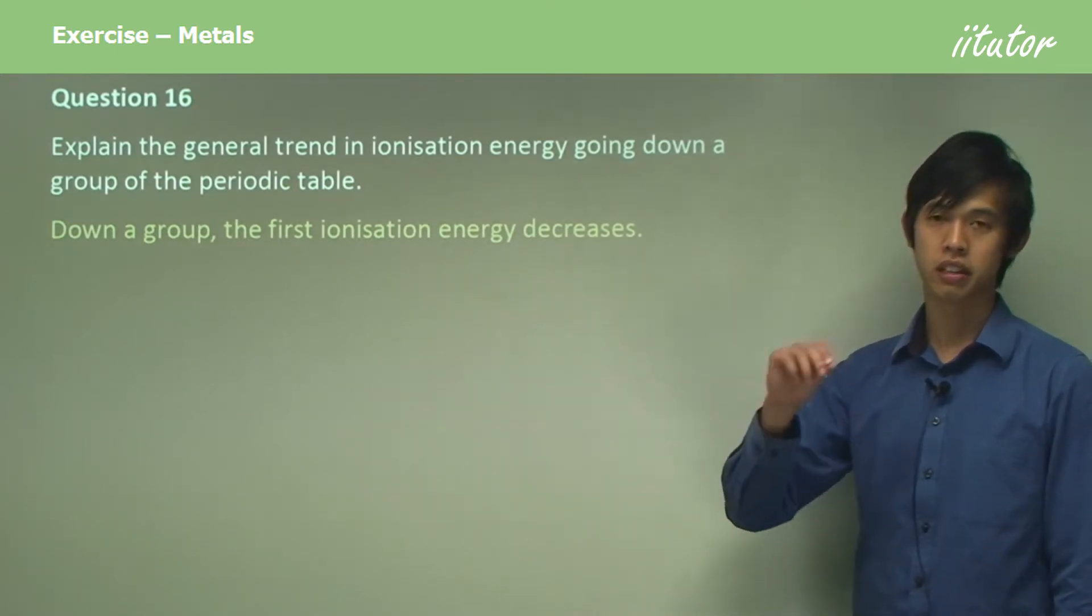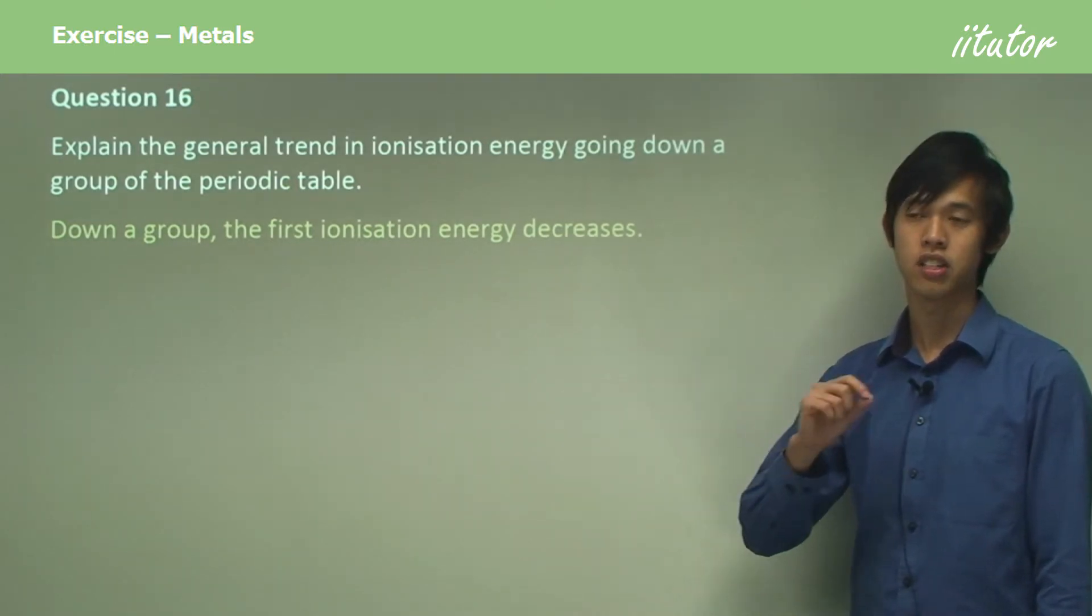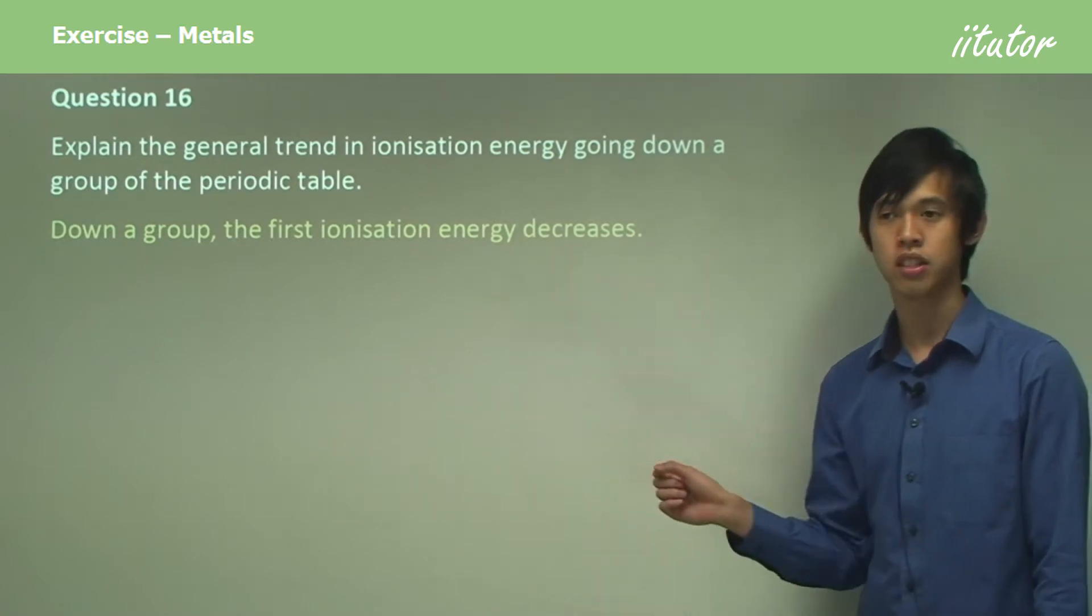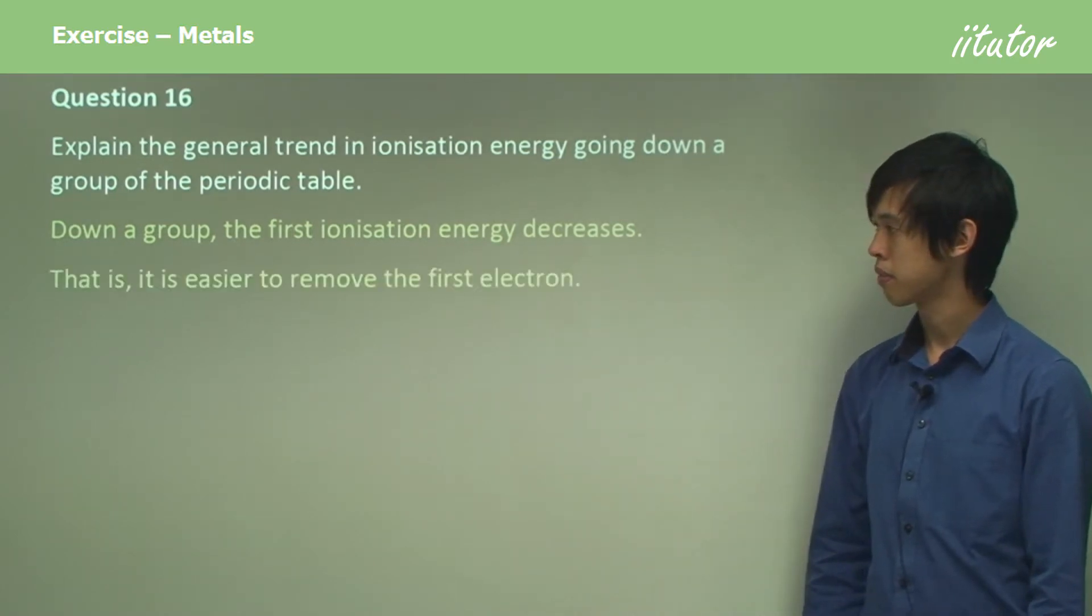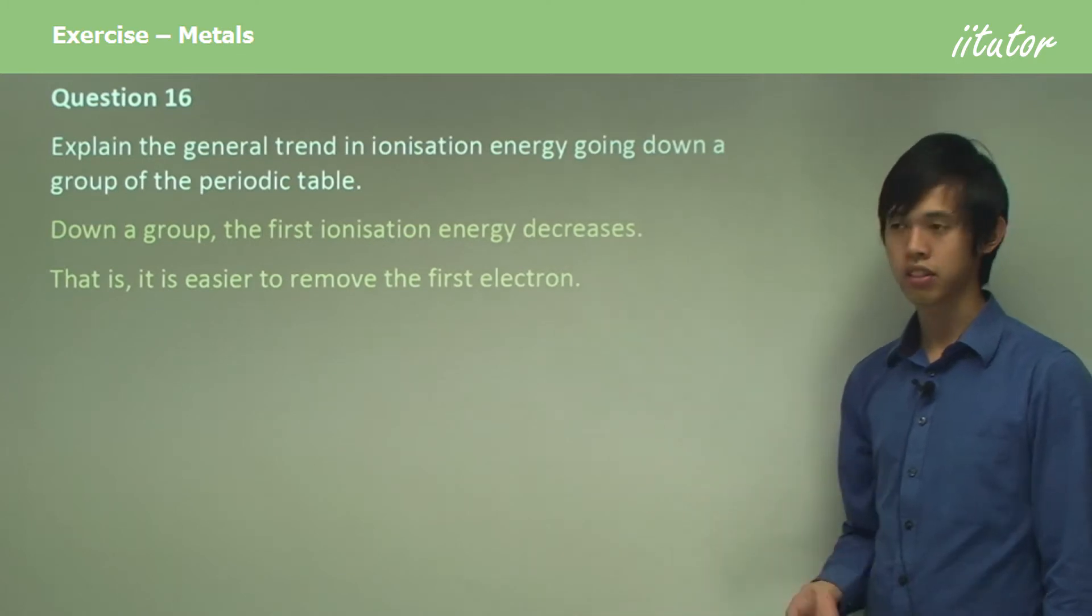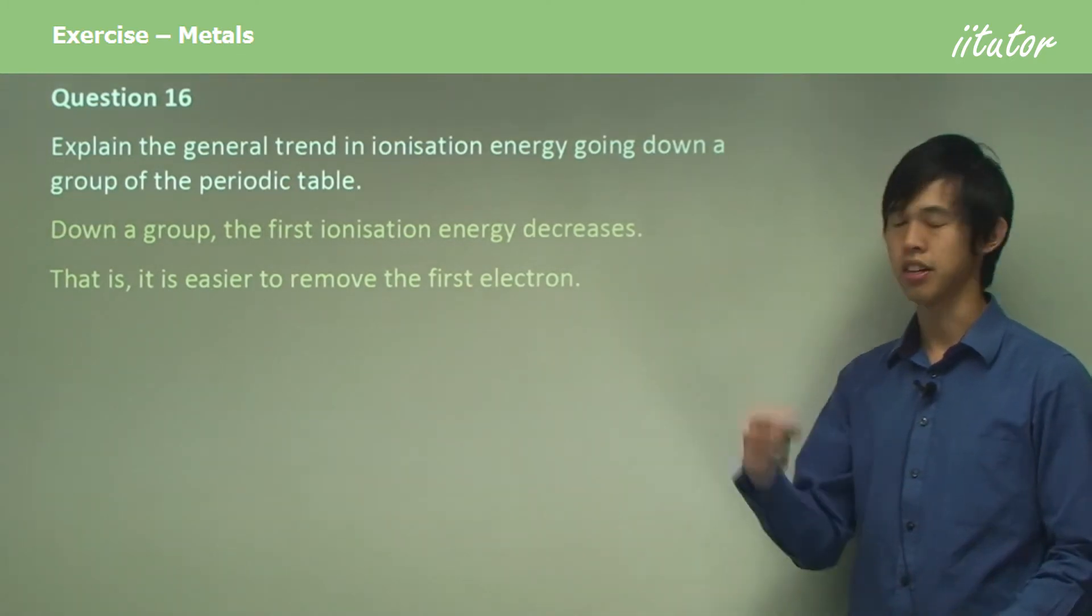The first ionization energy is the energy required to remove the first electron from the outermost shell. That is, it's easier to remove the first electron as you go down a group.